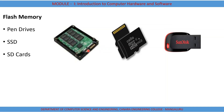A flash drive consists of small printed circuit boards carrying circuit elements and a USB connector, insulated electrically and protected inside a plastic, metal, or rubberized case that can be carried very easily. The USB connector is often protected inside a removable cap. USB devices are very commonly used nowadays — including pen drives, SSD cards, SD cards, and micro SD cards used in smartphones.